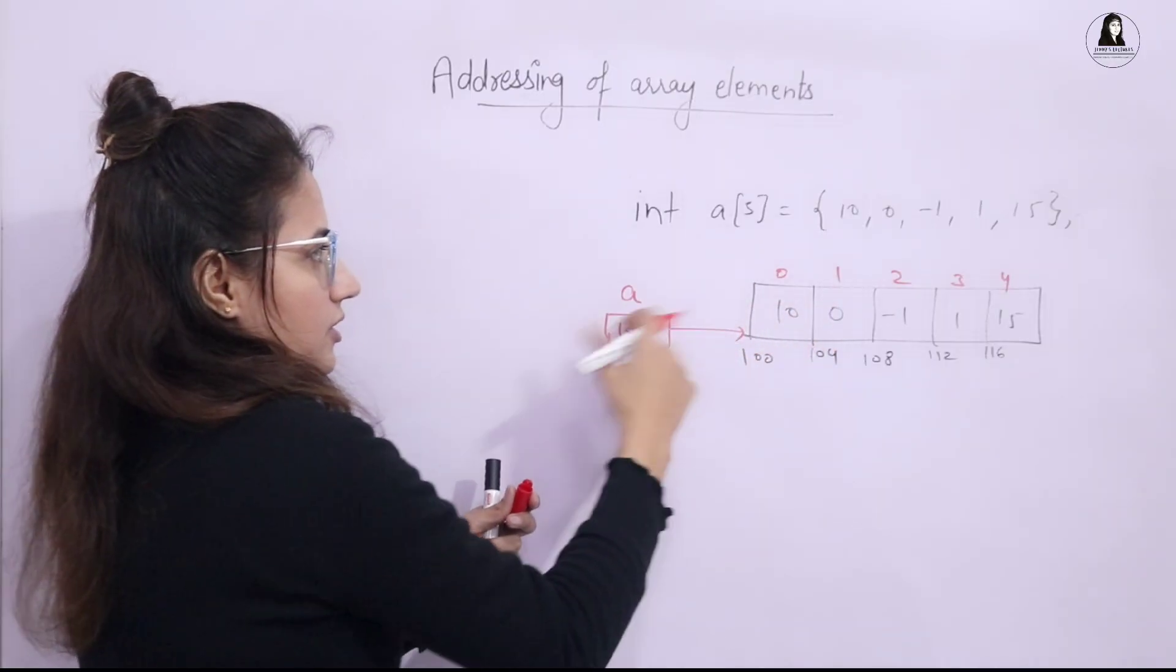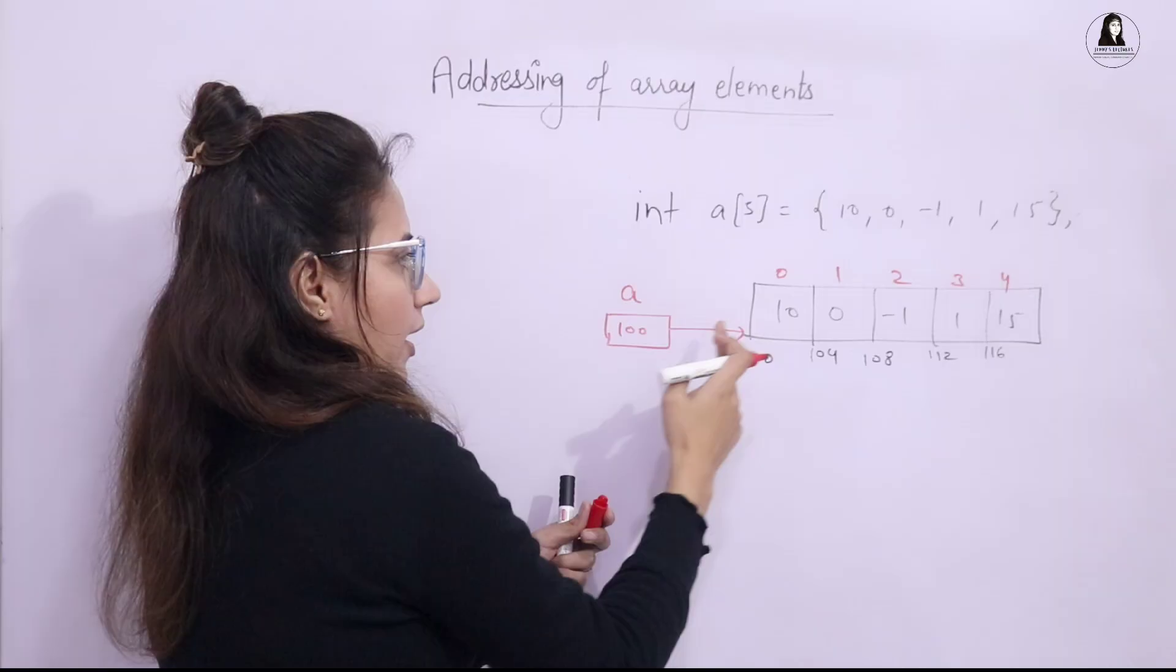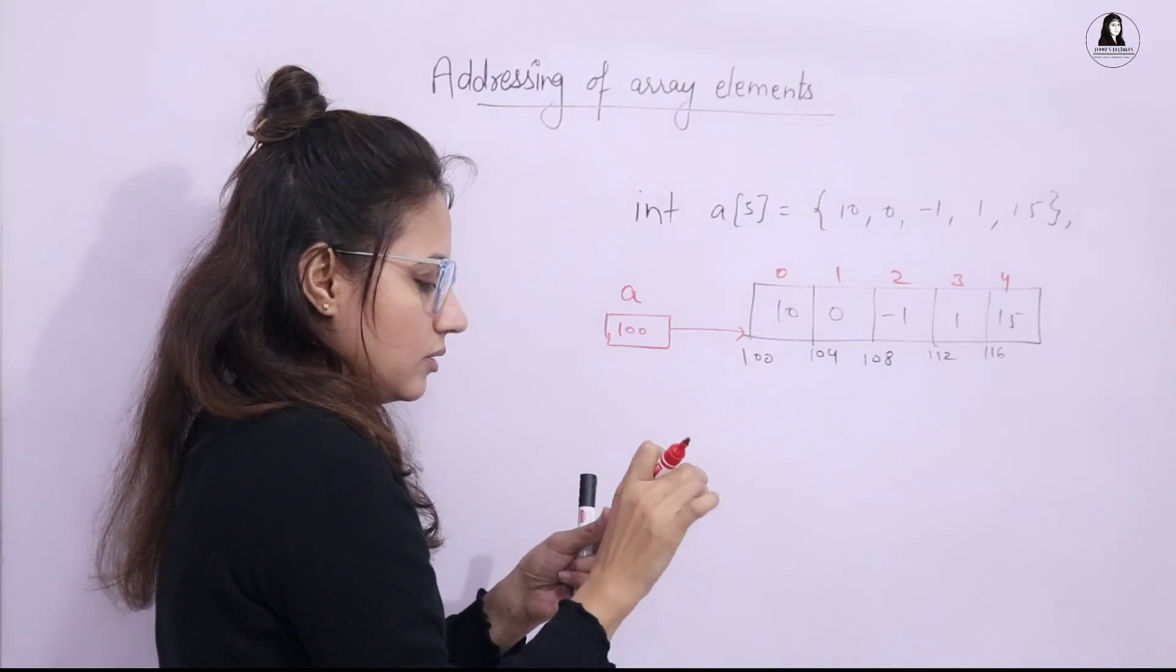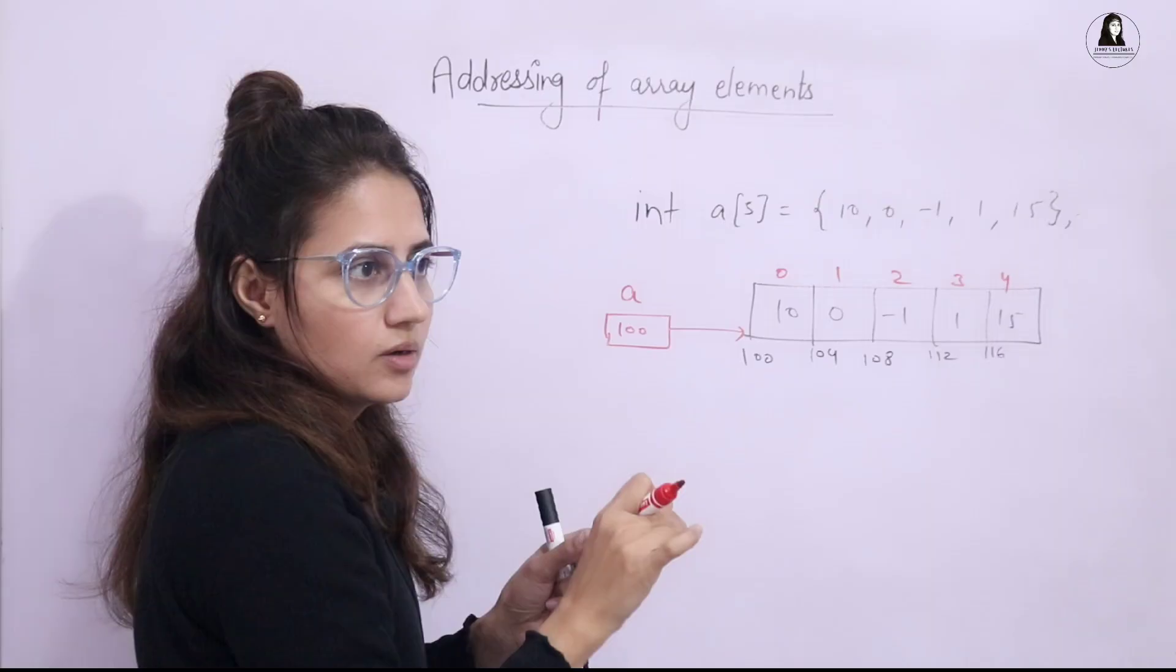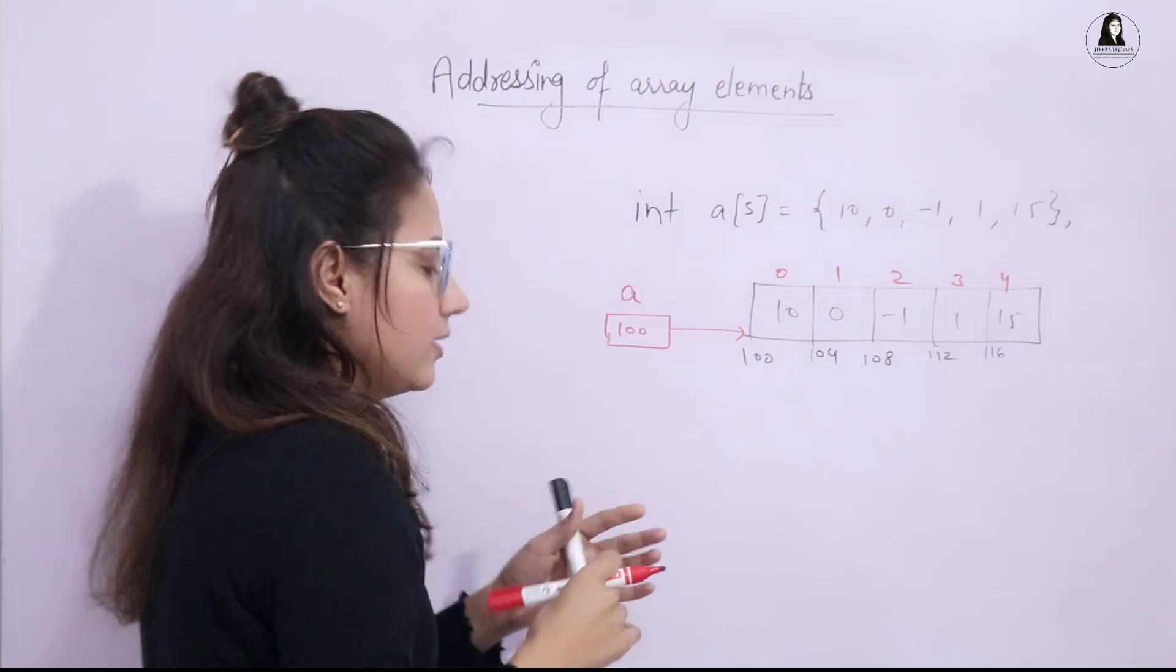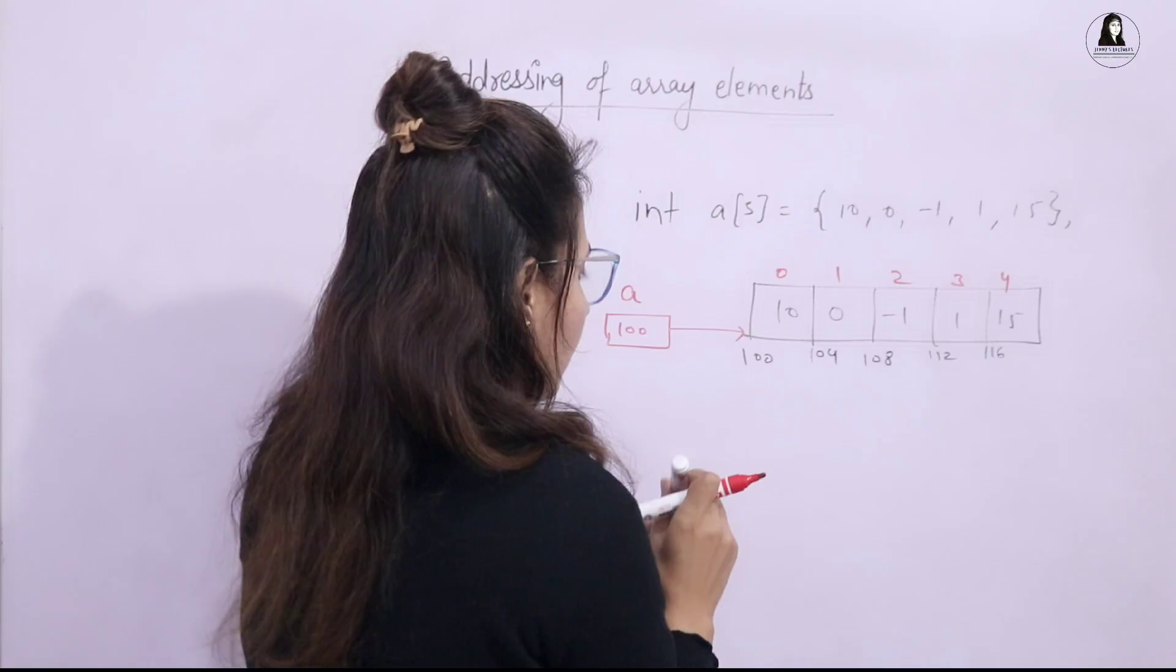See, we have discussed this thing, why this starts from 0 and all these things. The index starts from 0 when we were discussing the very first video of array. I guess the introduction, introductory part, introduction to 1D array. You can go and check out that video.